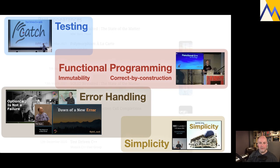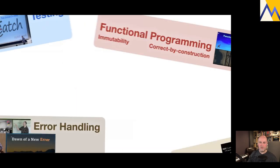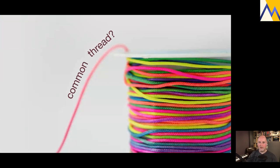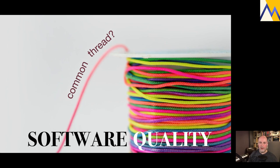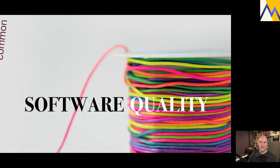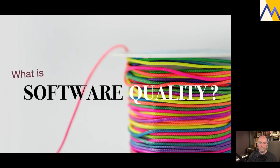Even within those four core areas, I noticed there was a common thread, something that unified all of them, and that is software quality. They're all in some way about software quality. So it raises the question: what is software quality? This is going to be a talk about software quality, so we should actually get straight what we mean by it, because it turns out there's a little bit of controversy over that.